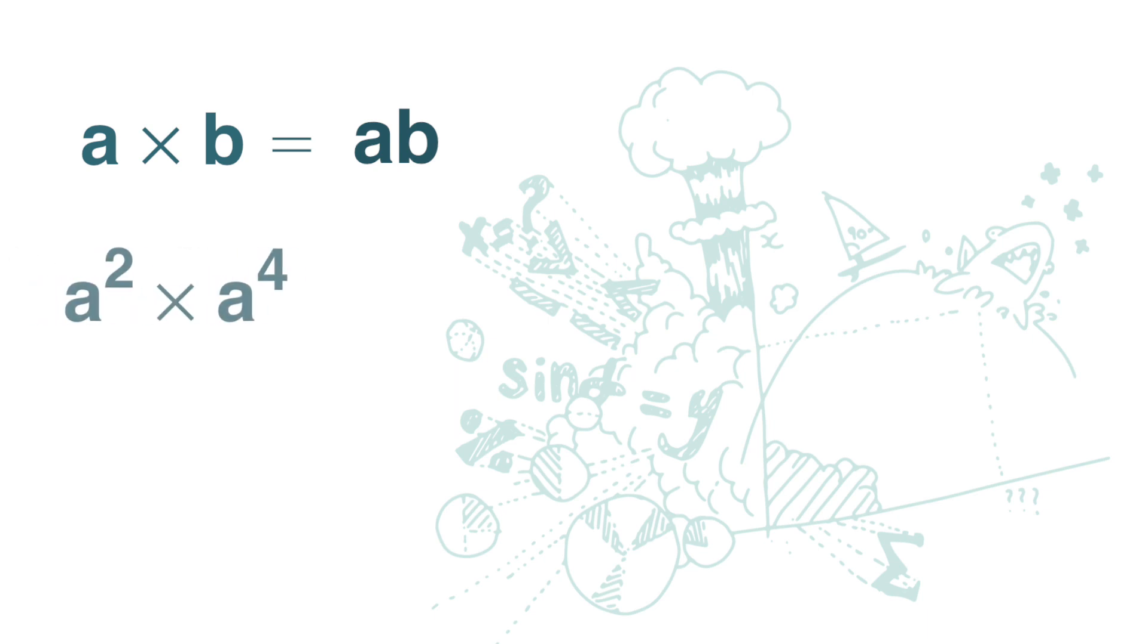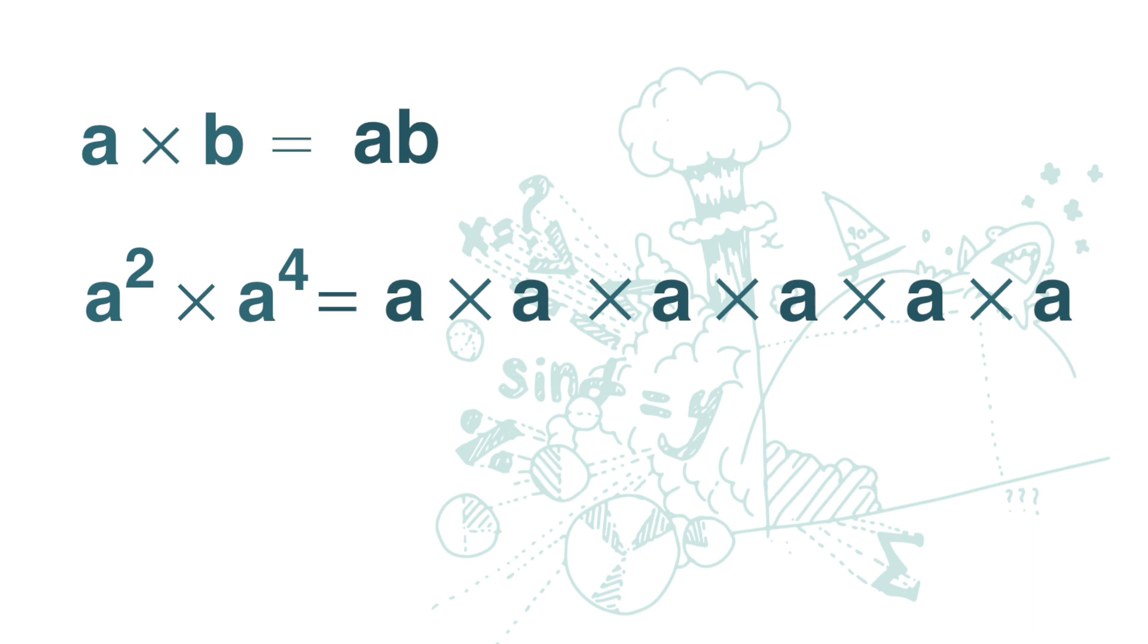Here we have a squared times a to the power of 4. a squared is a times a. a to the power of 4 is a times a times a times a, 4 times. Altogether, we have 6 a's. So the answer is a to the power of 6.